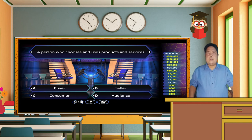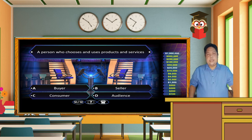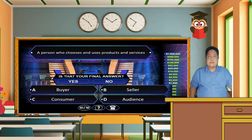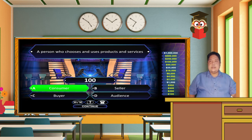A person who chooses and uses products and services is — A. Buyer, B. Seller, C. Consumer, D. Item. The correct answer is letter C. Consumer is a person who chooses and uses products and services.